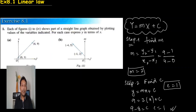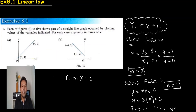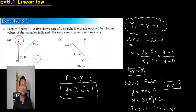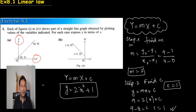Now to express y in terms of x, write capital Y equals m times capital X plus c. Capital Y is just y, so write y. m is 2, and capital X is x squared, so write x squared. c is 1. So the answer is y equals 2x squared plus 1. We can find any such equation using the same method: find the gradient, find c, and substitute the capital Y and capital X values.